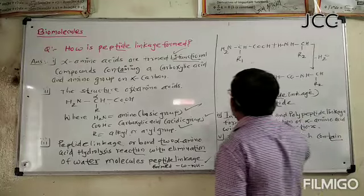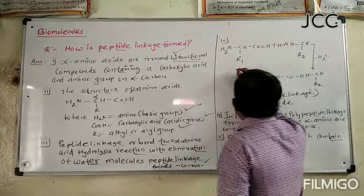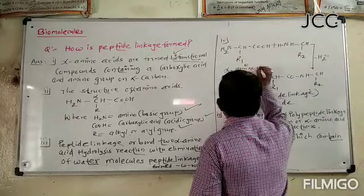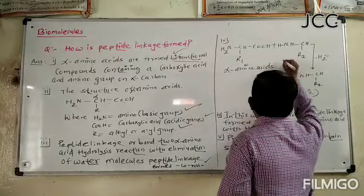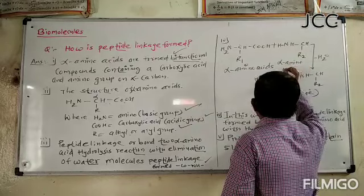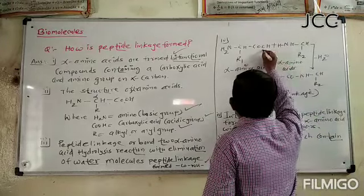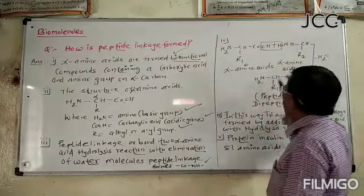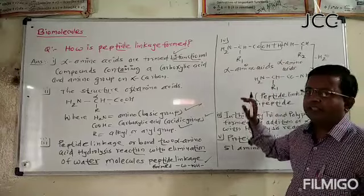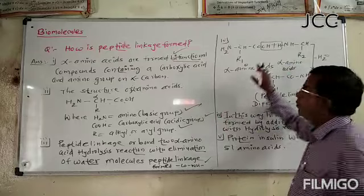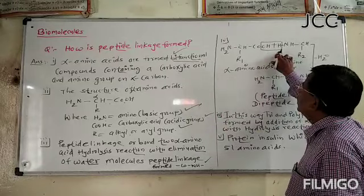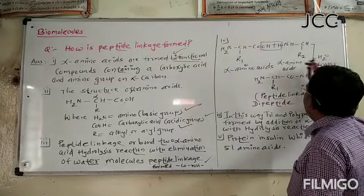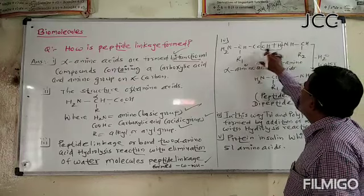In the reaction, two alpha amino acids undergo a condensation reaction. What is eliminated or removed is OH plus H, forming water. This water molecule is removed, and the peptide linkage CO single bond NH is formed by joining the two amino acids.